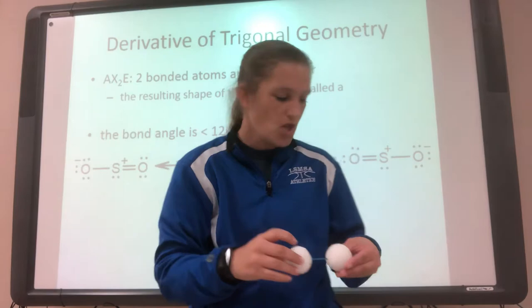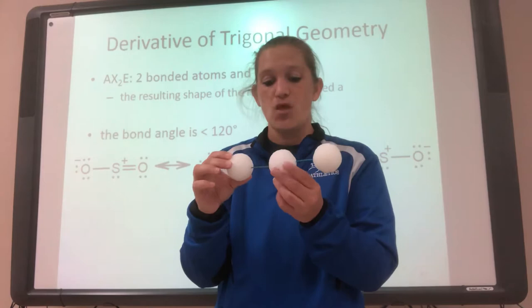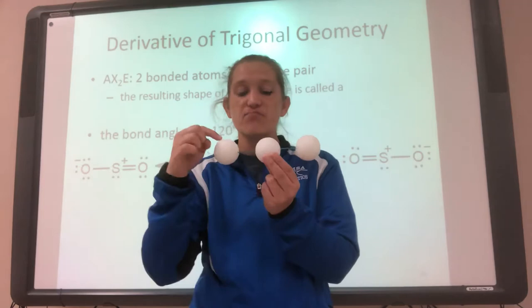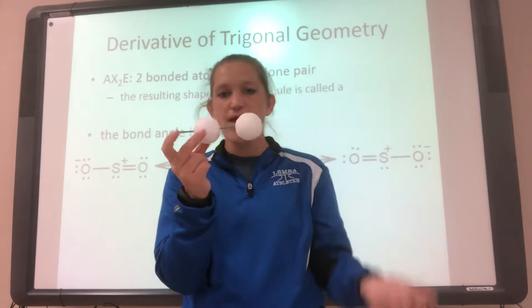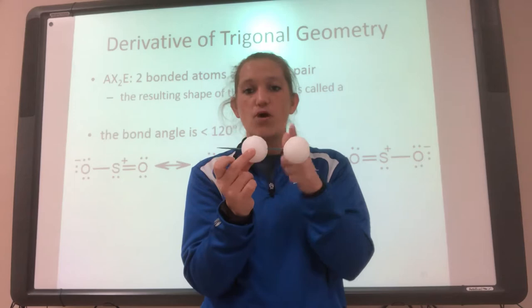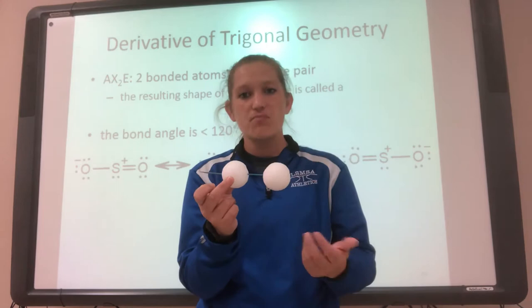What if we go back to our other linear, our AX2? AX2 has two bonds, but now instead of this being a bond, it's a lone pair. So what is this shape? If I have a central atom with one bond and one lone pair, it's still linear and it's still 180°. That's why I don't really have a slide on it — it doesn't really change whether it's lone pairs versus bonds.